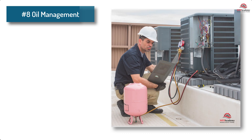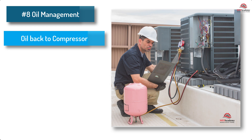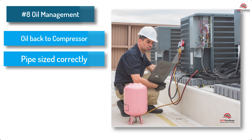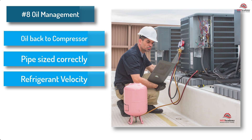8. Refrigerant oil management. Oil will be circulated around the system with the refrigerant and must be returned to the compressor, where it's needed to provide lubrication of bearings and moving parts. For this to happen, it's important that the refrigerant piping is sized correctly, including the refrigerant velocity. As refrigerant changes from a liquid to a vapor in the evaporator, the oil is separated out, which requires the correct velocity to ensure that the oil returns to the compressor at the same rate at which it leaves.